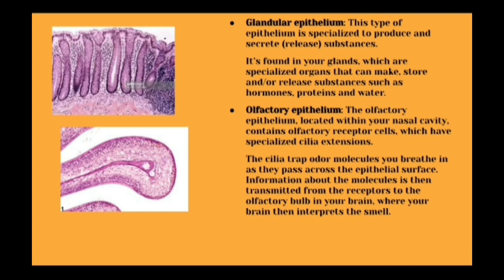Olfactory epithelium is located near the nasal cavity. The olfactory receptors have specialized cilia extensions that trap odor molecules when you breathe in air. These molecules move from the cilia onto the epithelial surface and are sent through the receptors into the olfactory bulb in the brain — that is how smell is interpreted and recognized.